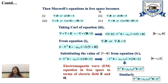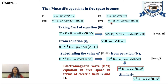Using these facts, the Maxwell's equations in free space become: divergence D equals 0 (since rho is 0). The first Maxwell equation is divergence D equals 0. The second is divergence B equals 0. The third is curl of E equals minus del B over del t. The fourth is curl of H equals del D over del t.